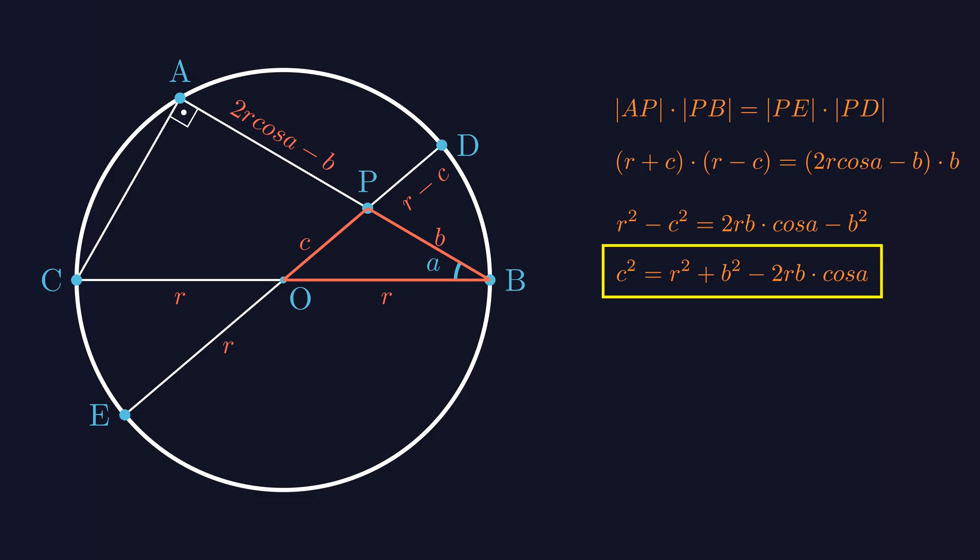The development of this theorem, reaching this final form, is something nearly all of humanity contributed to over time. Every civilization played a part. And if the angle alpha happens to be 90 degrees, then cosine alpha becomes zero. And what you get is the Pythagorean theorem.